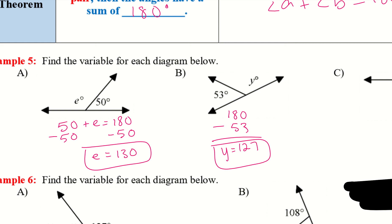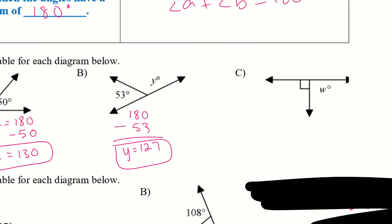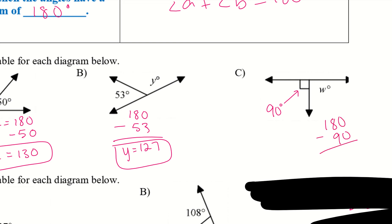Whichever way you decide to do it, you can set up your equation and subtract, or just subtract your number directly to get the other side. For C, remember the box symbol means 90 degrees — it shows a right angle. A nice thing to remember: 180 minus 90 is 90. So if one half is 90 degrees, the other half will also be 90 degrees — W equals 90 degrees.